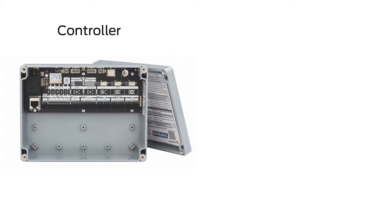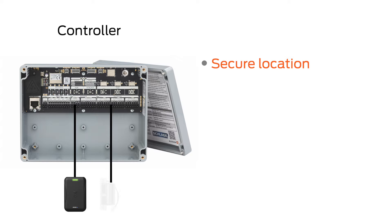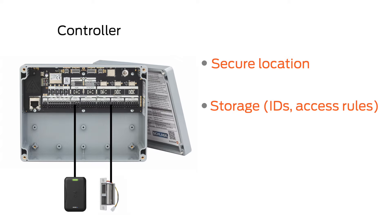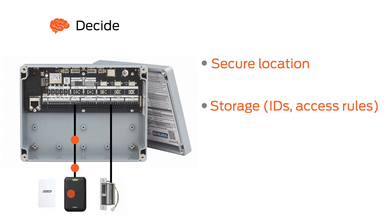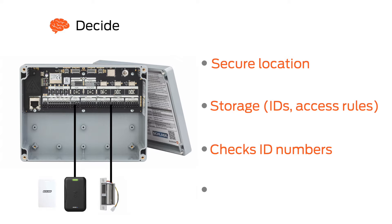The controller is usually a plastic or metal box mounted on a wall in a secure area of the building, and has wiring connections to the card readers and the locking devices. It may also have storage to remember all the valid card IDs and the rules for access. The controller is like the brain of the system — it's the part that does the deciding. When it receives an ID number from one of the readers, it checks to see if it's a valid ID number, and any other conditions for access, such as time of day or what door they're trying to access.